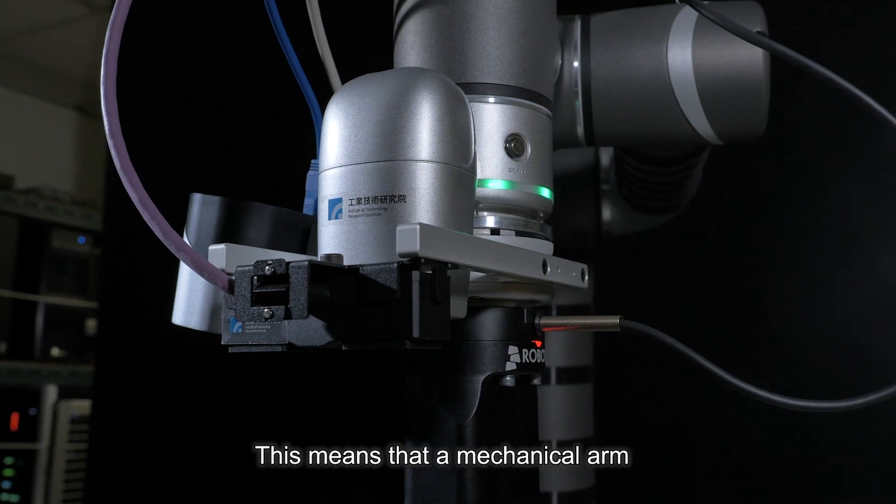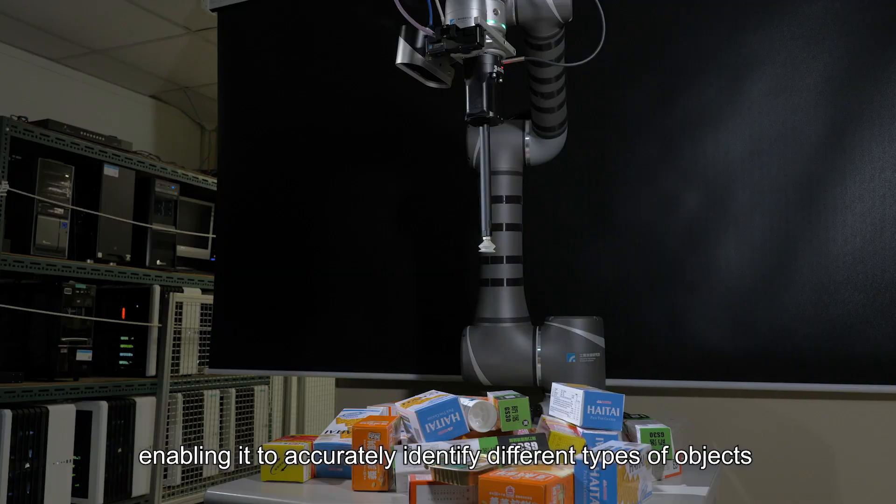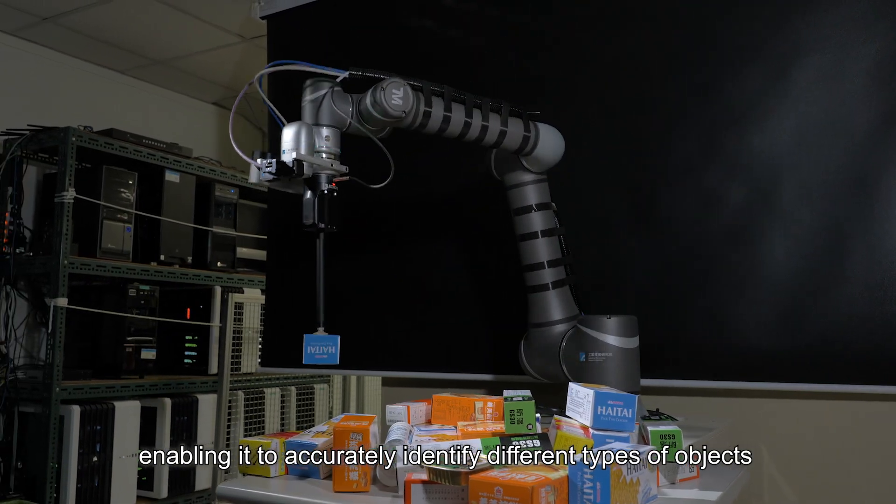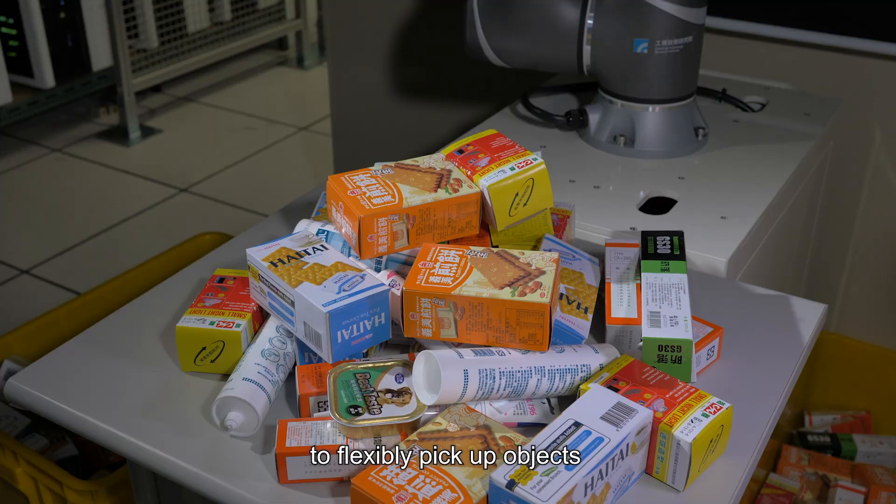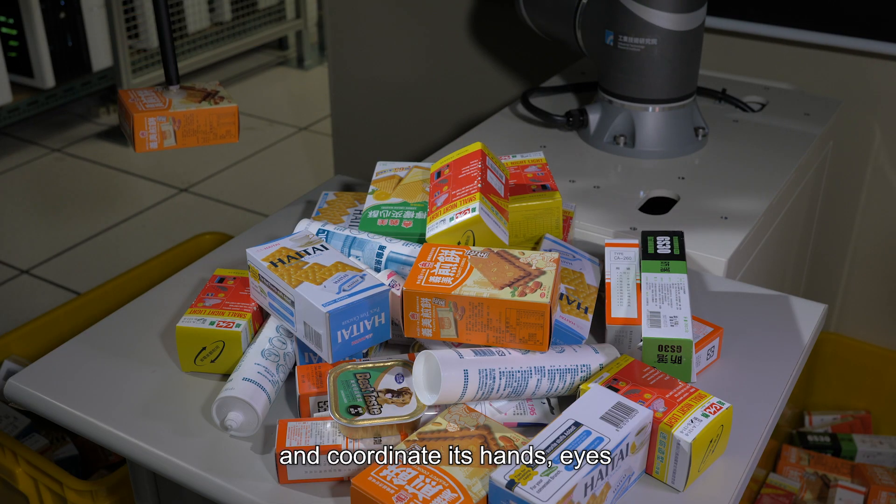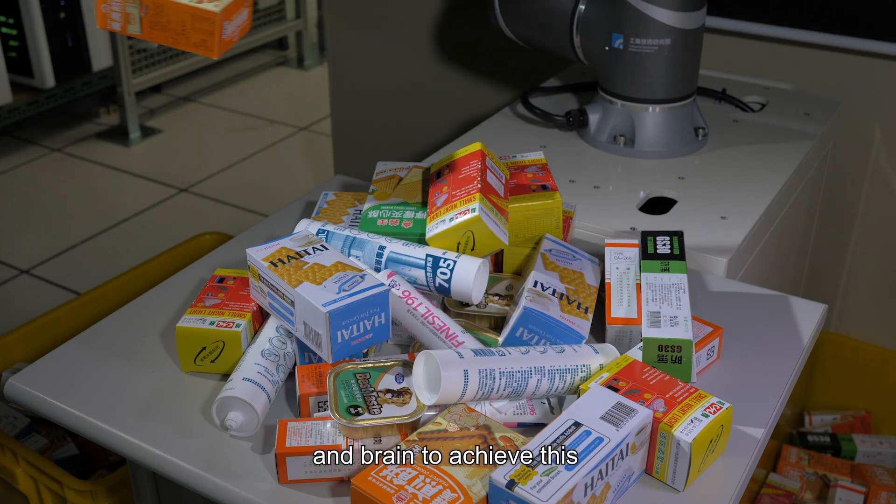This means that a mechanical arm seemingly has grown eyes and a brain, enabling it to accurately identify different types of objects. It can quickly learn on its own methods to flexibly pick up objects and coordinate its hands, eyes, and brain to achieve this.